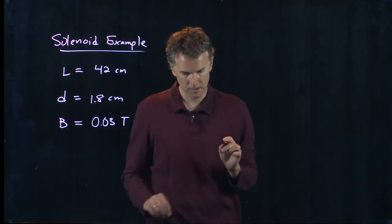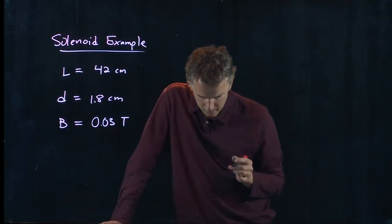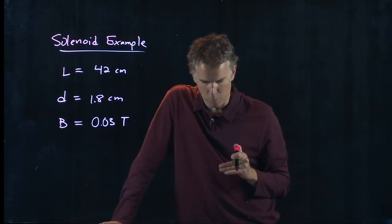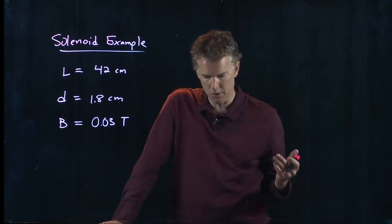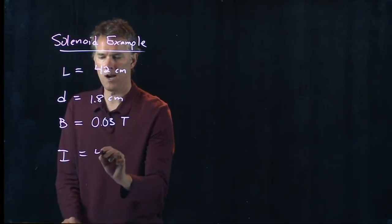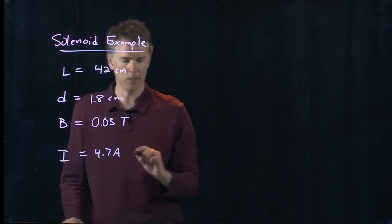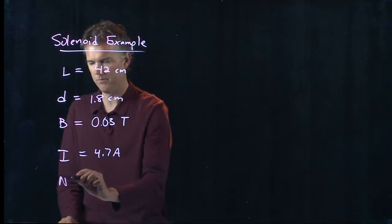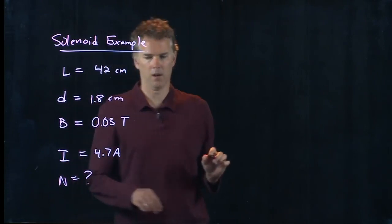The question is if the maximum current is 4.7 amps, how many turns must the solenoid have? So I is going to be 4.7 amps and we want to know the number of turns.